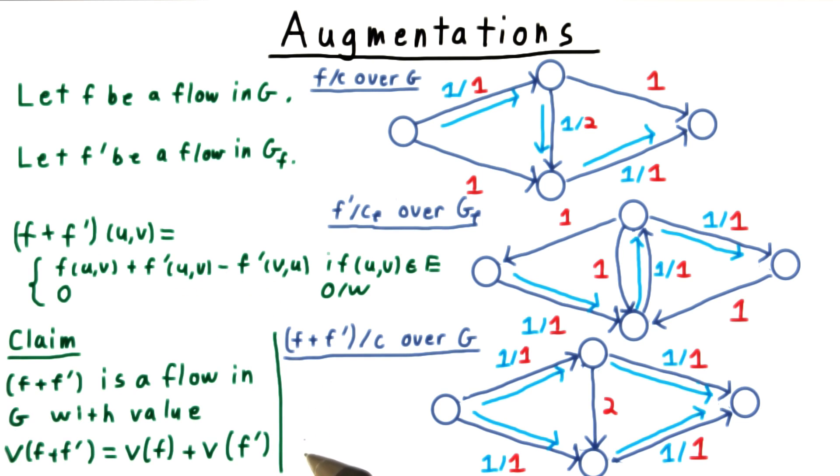Now, I claim without proof that this augmented flow is a flow in our original network G, and that its value is just the sum of the two values of the individual flows.